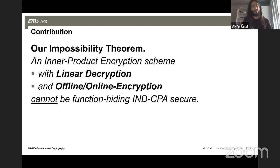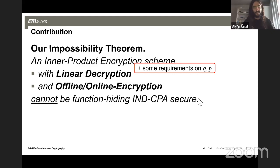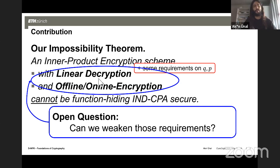What we proved is that if you have an inner-product encryption scheme with linear decryption and offline-online encryption, then it cannot be function-hiding CPA-secure. There are also some requirements on the ciphertext space that need to be fulfilled, but those are not atypical. An interesting open question is whether we can weaken any of those requirements. Thank you.